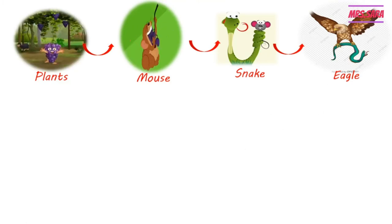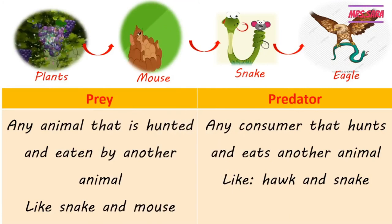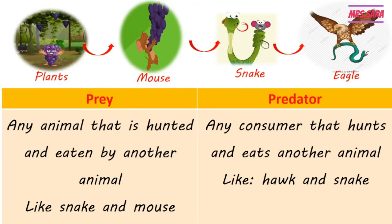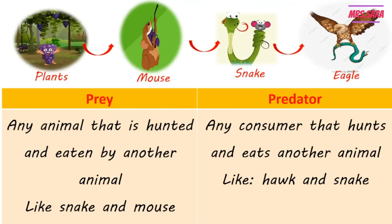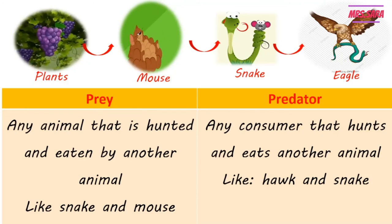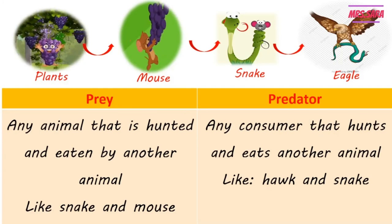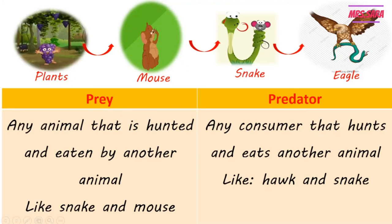We have something called prey and something called predator. The prey is any animal that is hunted or eaten by another animal. In this food chain, the mouse is eaten by the snake, so the mouse is prey. The snake is eaten by the eagle, so the snake is also prey for the eagle.